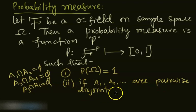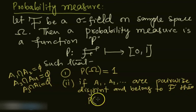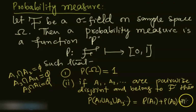So if these are pairwise disjoint and belong to the sigma field, then probability of the union A1 union A2 union A3 and so on is equal to probability of A1 plus probability of A2 plus probability of A3 and so on. So the probability of union of pairwise disjoint sets is equal to sum of the probabilities of those sets. That's the probability measure.